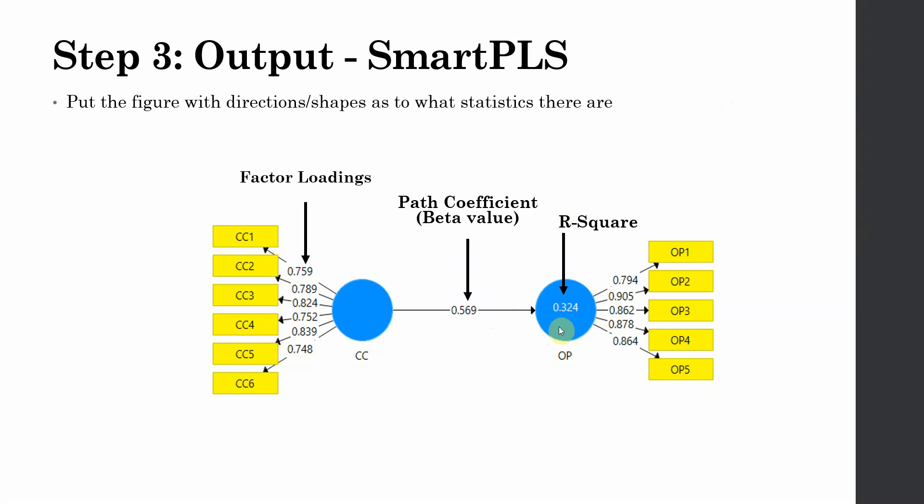Now look at this arrow pointing towards this value. And you do not see any value here because the R-square is always for the dependent or endogenous variables in your model. Now since it is an endogenous variable that is being influenced by another variable and there is one arrow pointing towards it, the R-square value is 0.324.